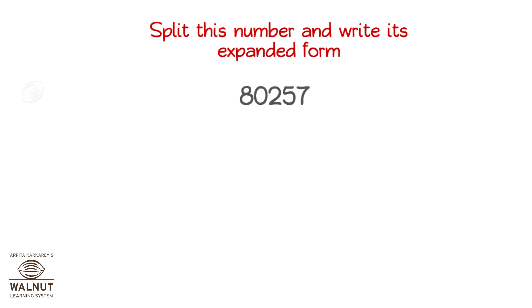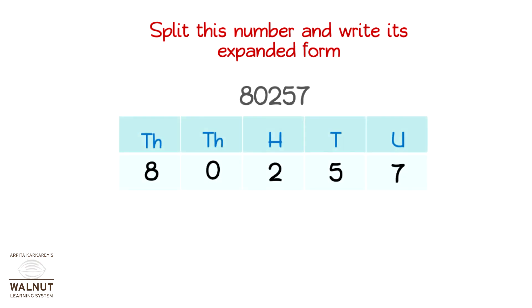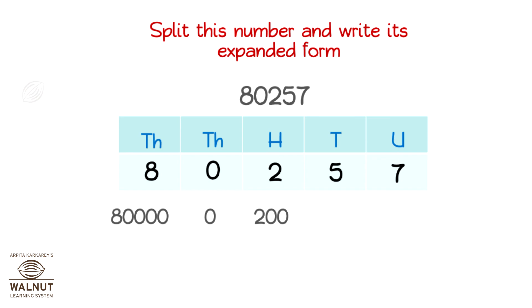Now let's expand the number in each position according to its place value: 80,000, 0, 200, 50, 7. When we add them up, we get the expanded form of the number.